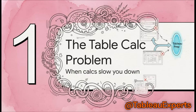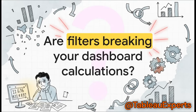Let's set the scene. We all know table calculations are super powerful for analysis right inside Tableau Desktop. But the moment you try to take a dashboard that uses them into production, that's when you can run into some pretty serious headaches. You build the perfect moving average, it looks great. But the moment your user clicks a filter, the whole thing just falls apart. It starts giving them results that are confusing, or even worse, just flat out wrong. It's a classic and oh so frustrating problem.